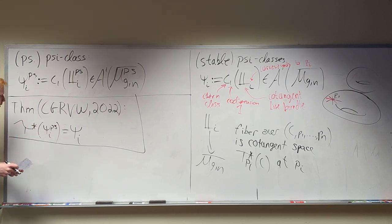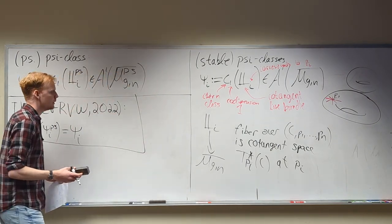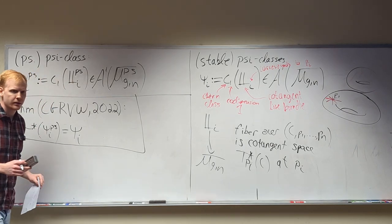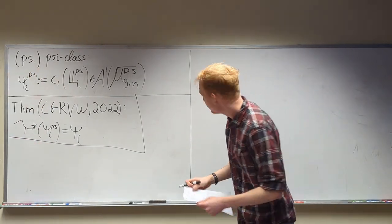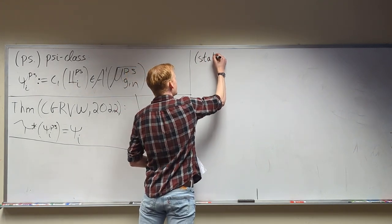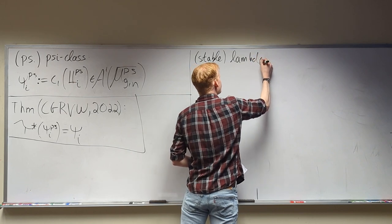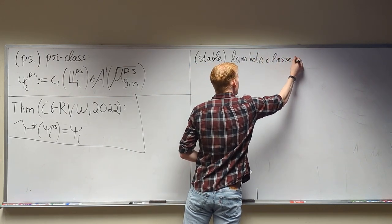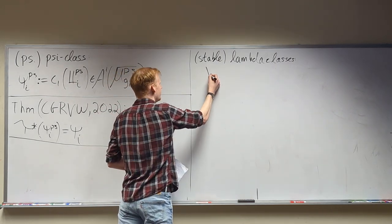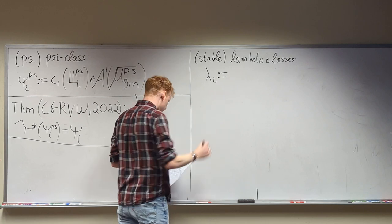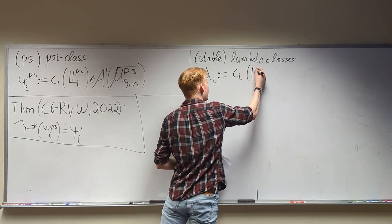So the tautological rings don't quite line up, but the psi classes do? Yes. Let's start with stable lambda classes. The i-th lambda class is defined to be the i-th Chern class of the Hodge bundle, and this lives in the codimension-i piece of the Chow ring.